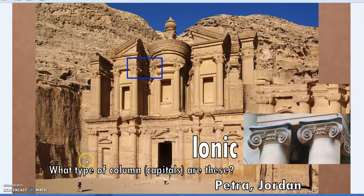I thought it wouldn't be easy to describe the answer in a comment, and maybe some other people might be interested in helping identify these. When you look up Corinthian or ionic images they tend to show the formal standard versions, but there is a lot of variation within each of the three orders — and that's not even bringing in the two Roman orders of Tuscan and Composite Corinthian. Anyway, SGD, cheers.